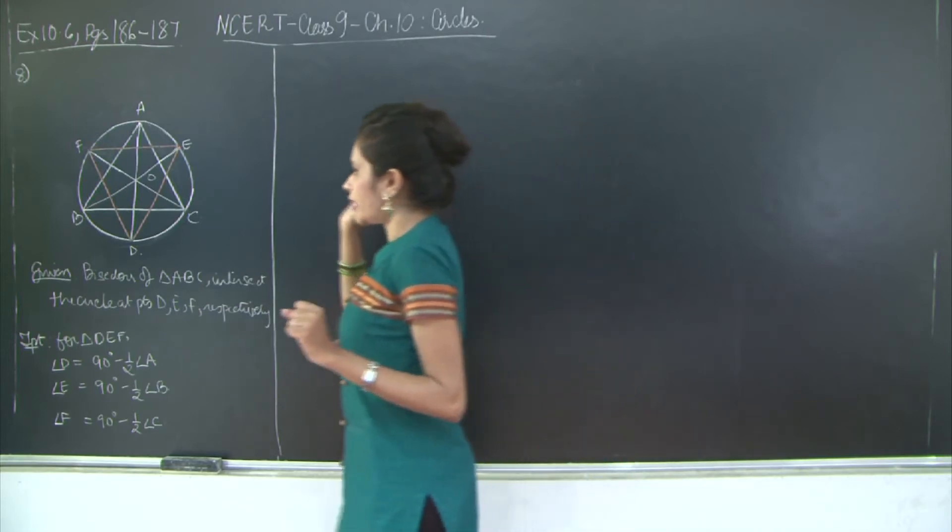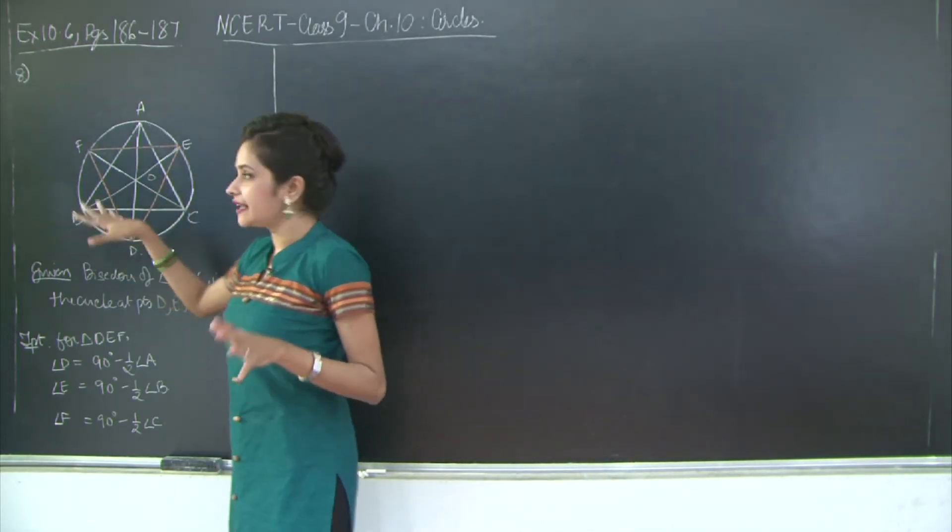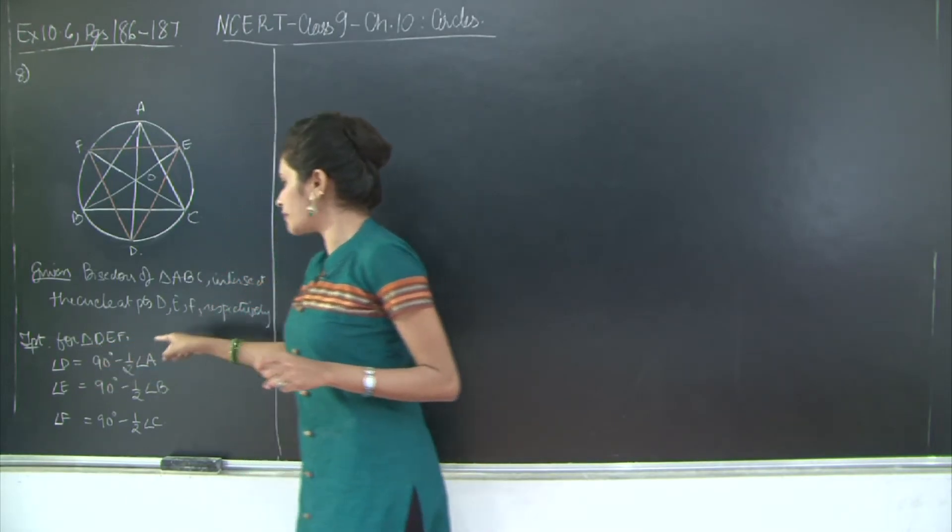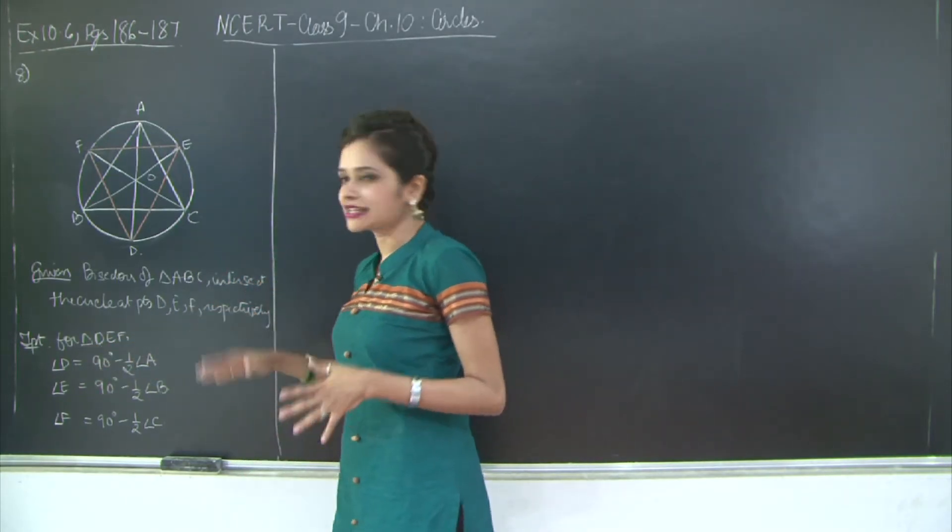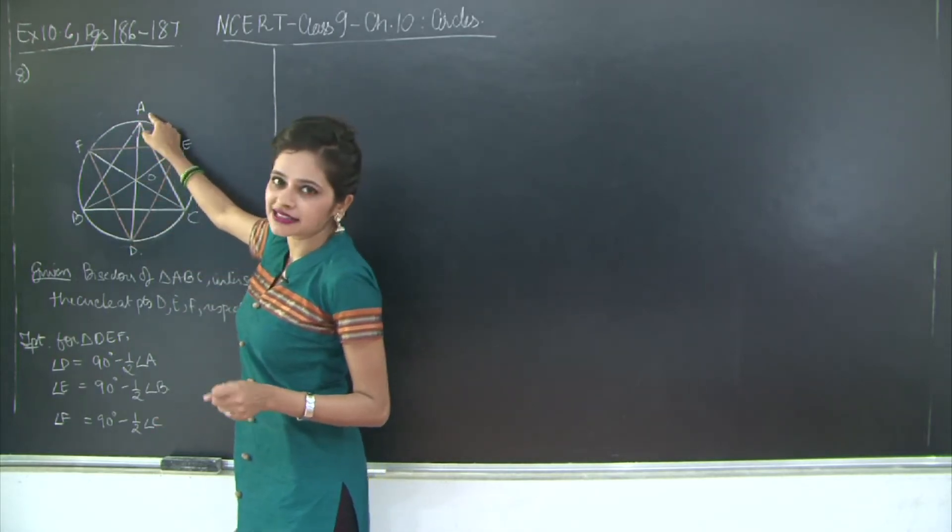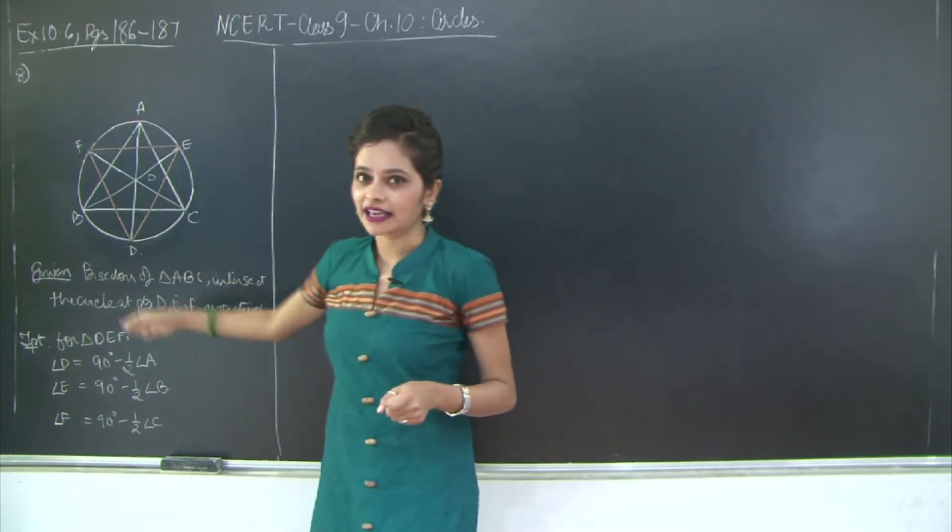Now for the triangle DEF so formed, I need to prove that angle D is equal to 90 minus half angle A, so 90 degrees minus half angle A, where AD is the bisector of angle A.